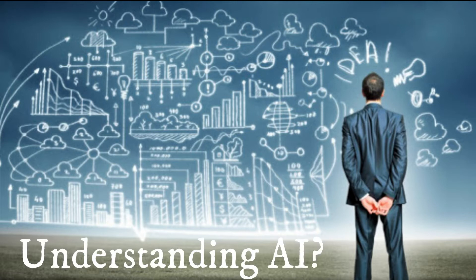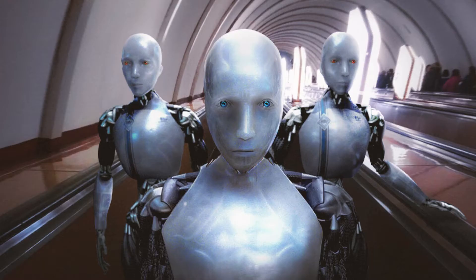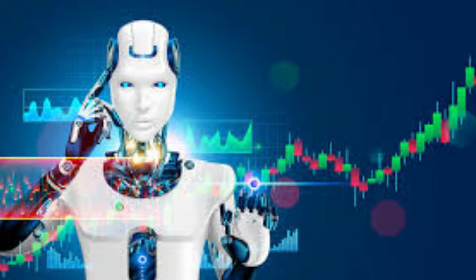Understanding AI: when most people hear the term artificial intelligence, the first thing they usually think of is robots, but AI is far more in-depth. Artificial intelligence is based on the principle that human intelligence can be defined in a way that a machine can easily mimic it and execute tasks, from the most simple to those that are even more complex.